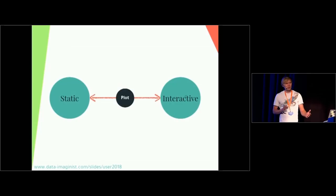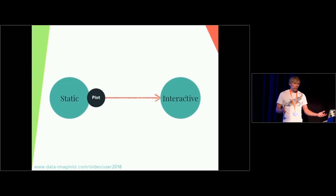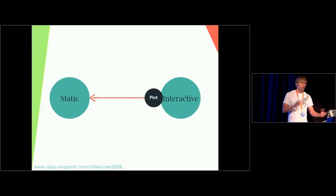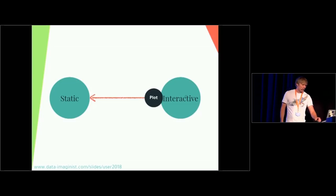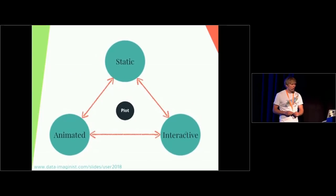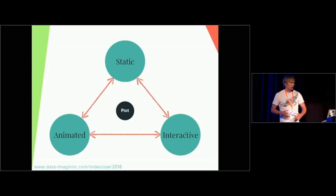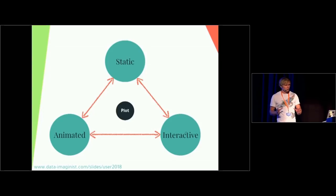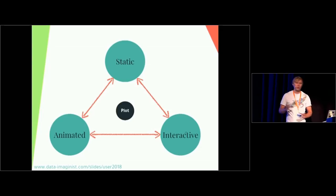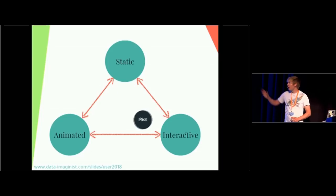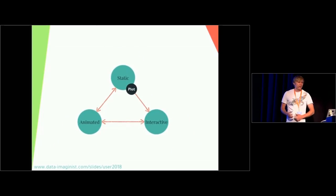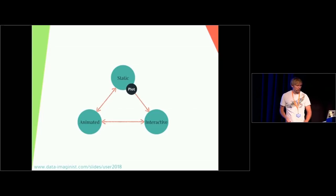This is also prevalent in how we talk about the plots we do. We either have a static plot or we make it interactive. I simply want to propose an additional dimension: being animated. Being animated is actually an inherent quality in a graphic just like being interactive. And more than that, it's completely orthogonal to being interactive. You can talk about animation without ever thinking about interactivity, and you can talk about interactivity without ever thinking about animation. Any given display can draw from any of these dimensions, and this can inform how you want to make your plot. There's also a continuum between the different extreme states.